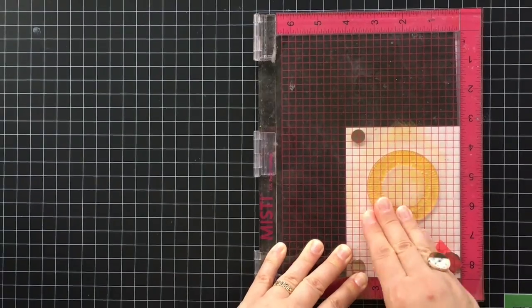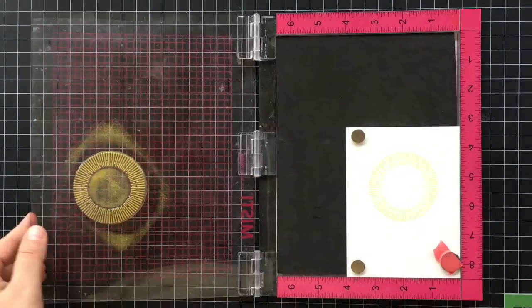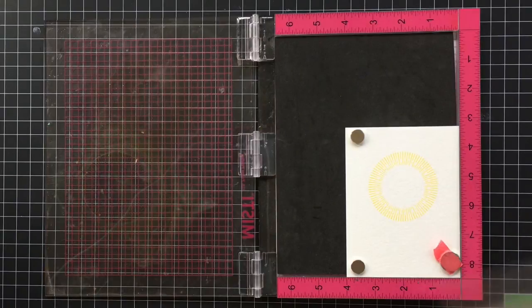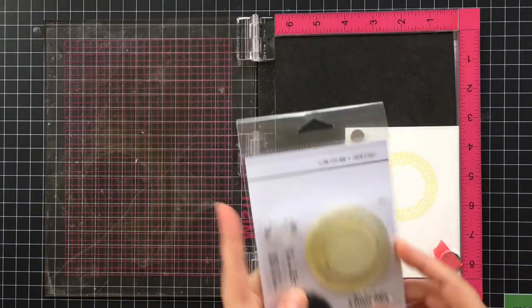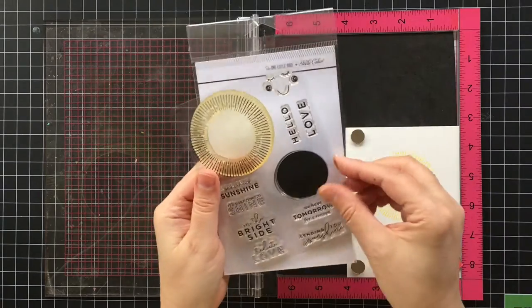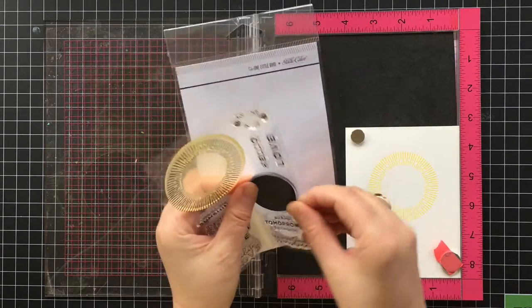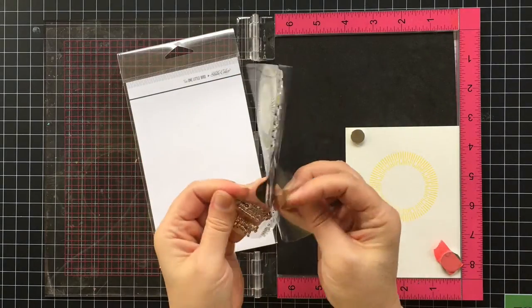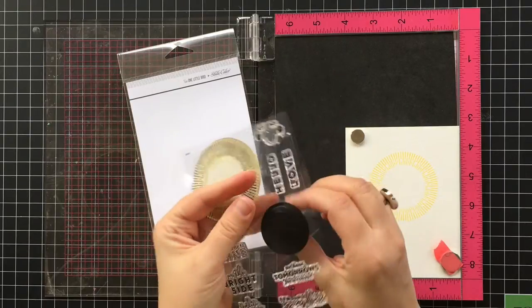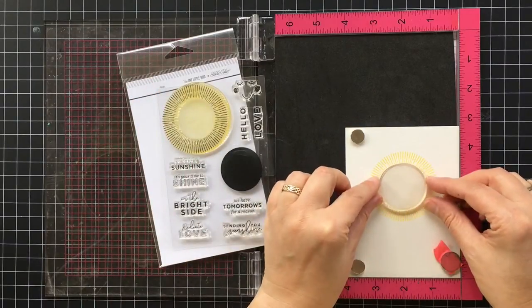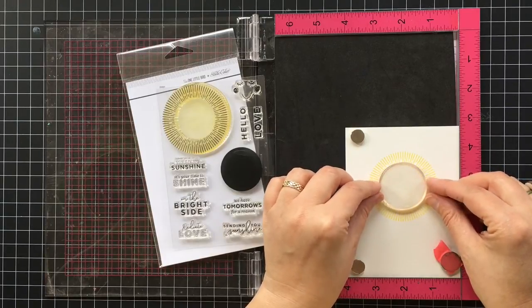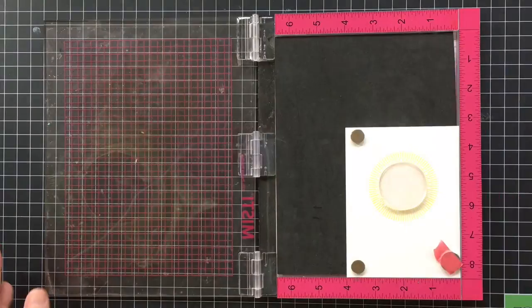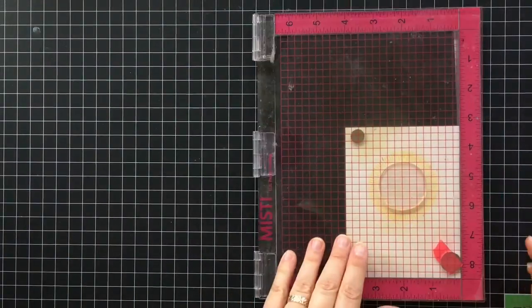Next I'm going to share some fun techniques that you can do with the center of the sun, that solid piece that's right here in the center. Solid stamps can be a little bit tricky to get a good impression, so that's one reason that I really like the MISTI tool aside from being able to position it exactly where you want it.